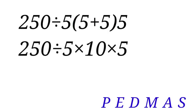Our question will now be 250 divided by 5 times 10 times 5. Now, we have division and multiplication in this expression. Since multiplication and division are in the same level of priority, we move from left to right. We are going to divide first. So, 250 divided by 5 gives 50. So we have 50 times 10 times 5.